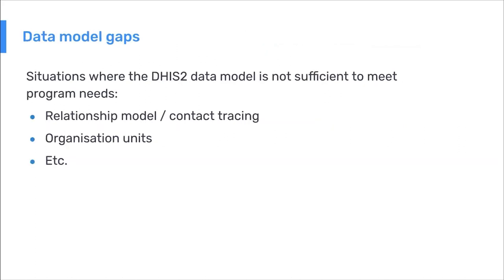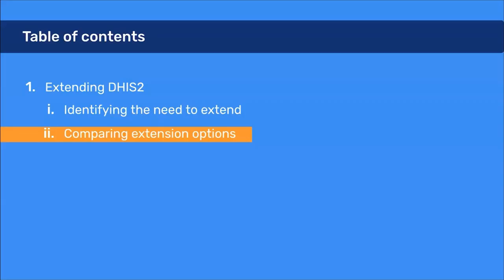Finally, it might be necessary to extend DHIS-2 to address gaps in the core data model. There are some situations where the DHIS-2 data model is not sufficient to meet program needs. For example, the relationship model might need to be extended to address contact tracing for communicable diseases. Similarly, organization units for facilities, districts, and national boundaries might need additional properties or features that are not built into DHIS-2 natively.